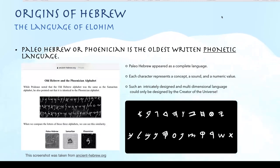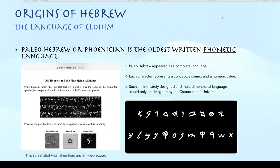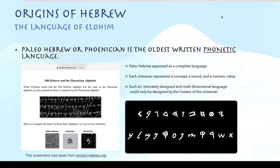Hebrew is the language of Elohim. Its first form was Paleo or Proto-Hebrew, also called Phoenician, and it's the oldest written phonetic language. The Egyptian hieroglyphics are older, but this is the oldest written phonetic language — meaning each letter has a specific sound that it represents. It appeared as a complete language, which is one of the things that's really unique about Paleo-Hebrew. It actually appeared with mathematical and pictographic meanings as well as the phonetic meanings, all embedded together as one cohesive language.